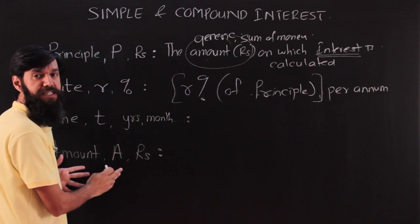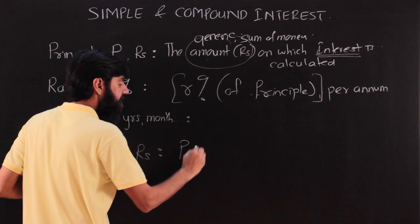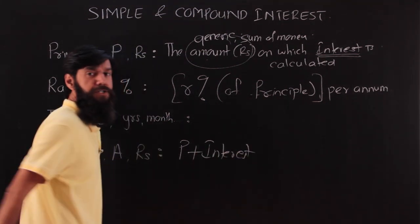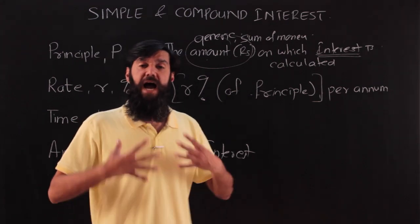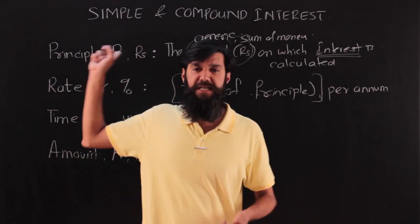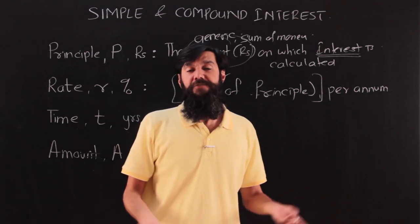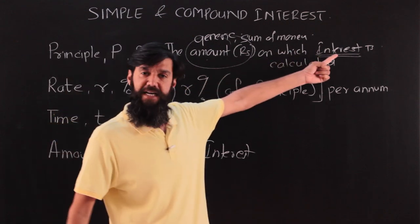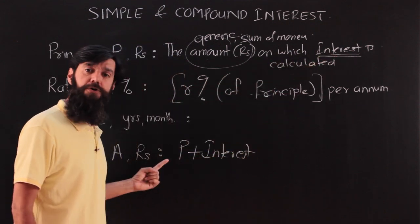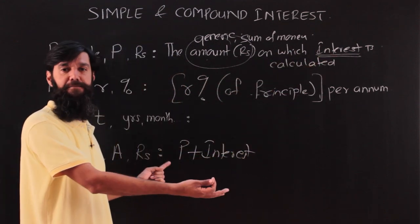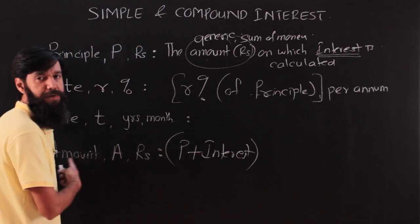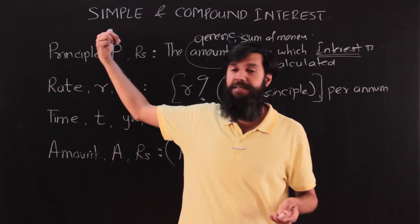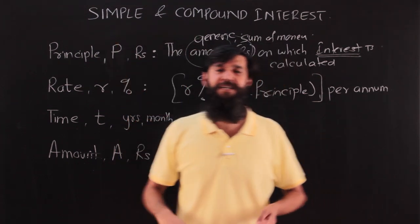Amount is nothing but the principal value plus the interest. Some money is kept in the bank — that is the principal lent to the bank. When the bank pays back, it returns the original principal plus the extra interest — those two together become the amount. There are two ways interest can be calculated: either simple or compound.